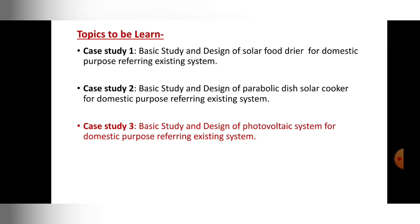The first case study we have seen is related to the solar food dryer. The second case study we have learned is related to the parabolic dish solar cooker — both of those case studies we have discussed. Now, related to the third case study, that is the solar photovoltaic system, we have discussed some topics and the remaining topics we are going to cover in today's lecture.